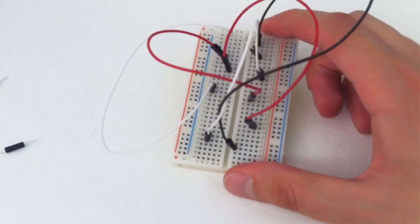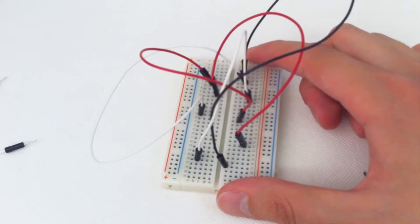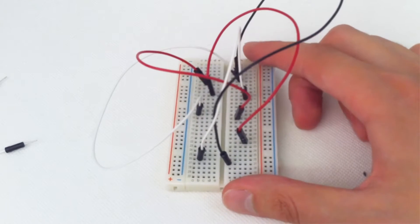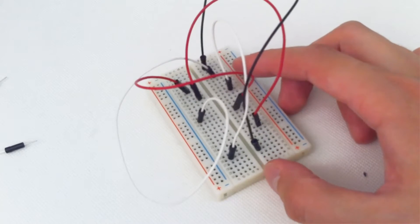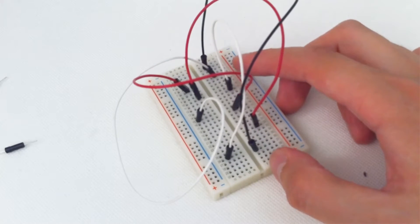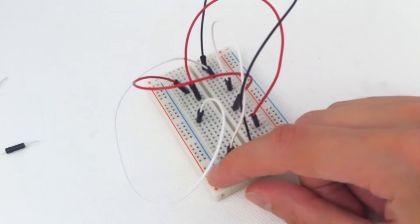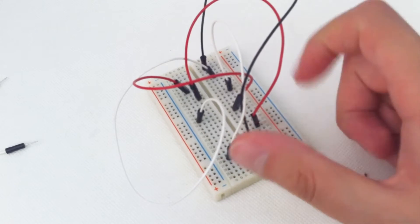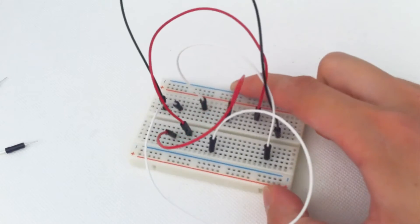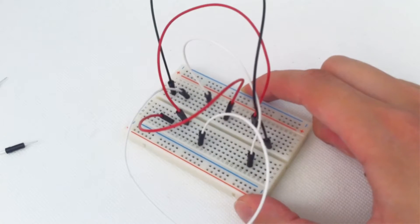Remember for the circuit to work there has to be a complete circuit without any breaks. If the wires aren't connected properly the electrons can't flow from one end of the circuit to the other. So if your circuit's not working it's always worth checking that the wires and the components are connected properly.